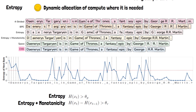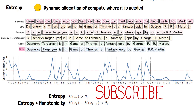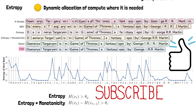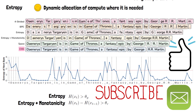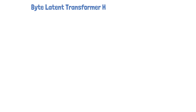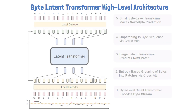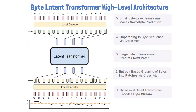We're now going to cover the Byte Latent Transformer architecture. Let's review the high-level architecture of the Byte Latent Transformer model using the following figure from the paper. The architecture comprises three key modules: the local encoder, the latent transformer, and the local decoder.